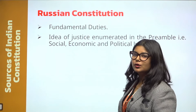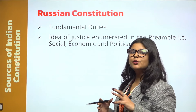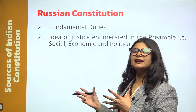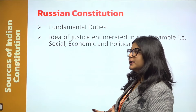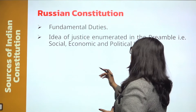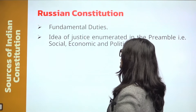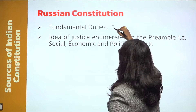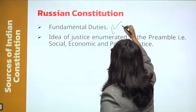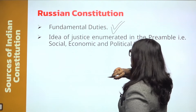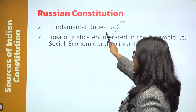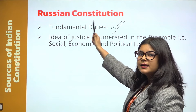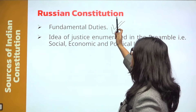Next is the provision for the joint sitting of the two houses of Parliament. The two houses are the Lok Sabha and the Rajya Sabha. The provision for their joint sitting is also adopted from the Australian Constitution.